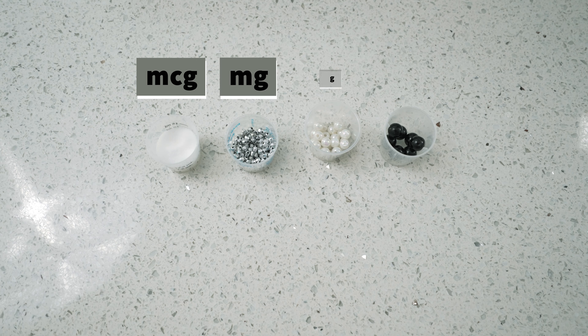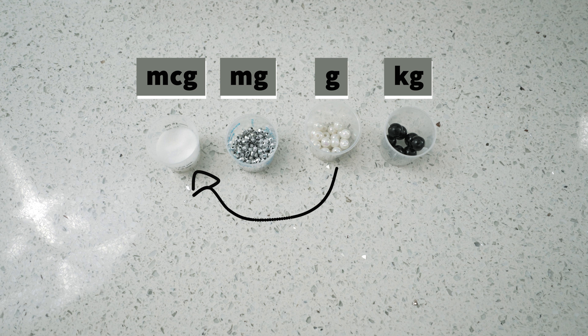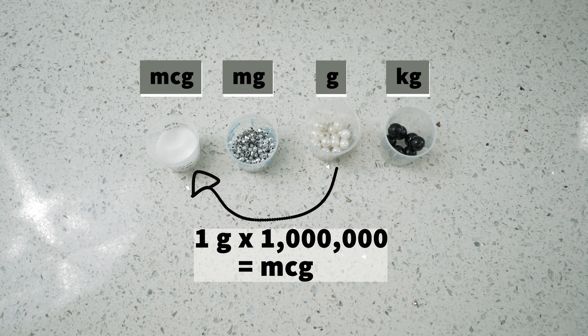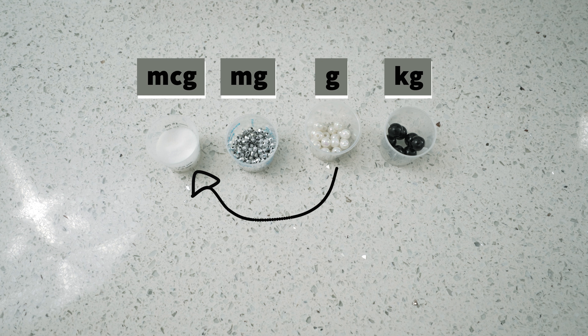So looking at unit conversions visually can help you understand why we are multiplying or dividing when we go from a small unit to a larger unit. For example, to go from one gram to one microgram you would have to multiply that one gram by a million. We know that it takes a million of these little salt granules — in this example — to make up one of these pearl beads that represent the grams.